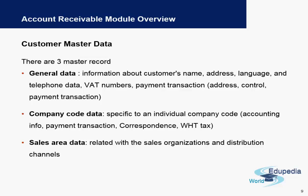General data will also cover the customer's bank data. After that, the customer may be created in different company codes, hence there is a company code data tab.